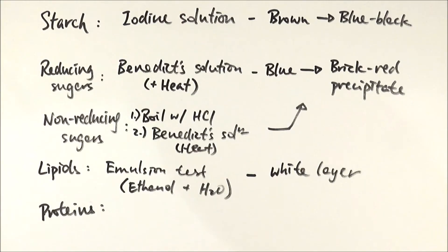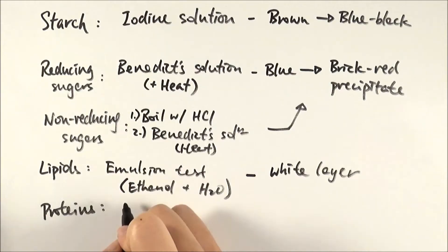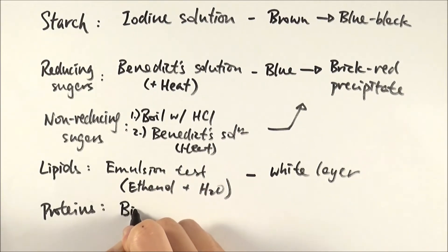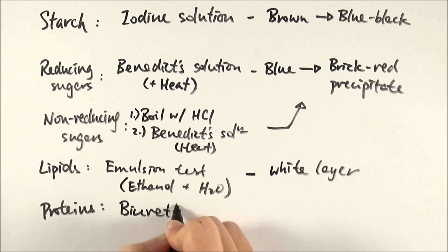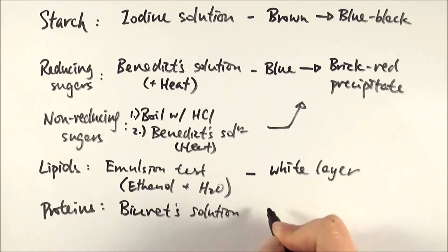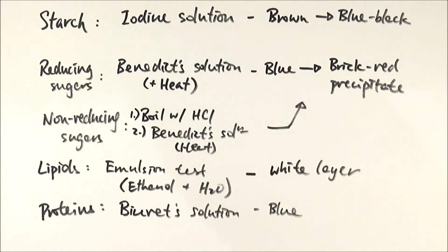Finally, proteins. The test for proteins is called the Biuret test, using Biuret solution. Biuret solution is also blue—it's also an alkaline solution of copper sulfate, but the composition is slightly different from Benedict's. Both are alkaline solutions containing copper sulfate, so they're both blue. In this case, all you need to do is mix the Biuret solution with your sample for a few minutes, and it will change from blue to purple or lilac.